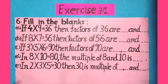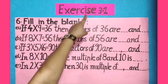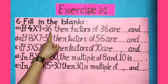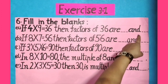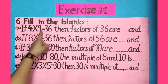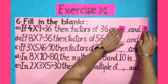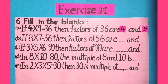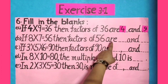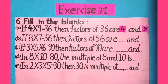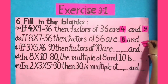Dear students, now we will do question number 6, fill in the blanks of exercise 3.1. Part A is: if 4 × 9 = 36, then factors of 36 are ___ and ___. Since 4 × 9 = 36, that means 4 and 9 are factors of 36. So we will fill in the blanks: 4 and 9. Part B: if 8 × 7 = 56, then factors of 56 are ___ and ___. Since 8 × 7 = 56, that means 8 and 7 are factors of 56. So we will fill in the blanks: 8 and 7.